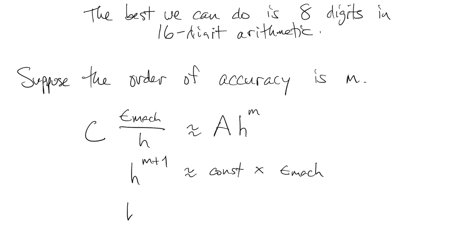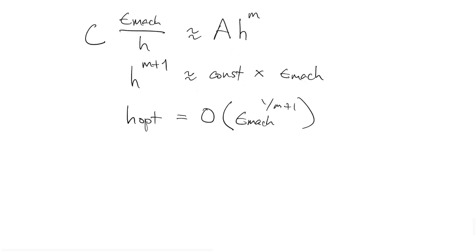When we work it out, this means that h-opt is now machine epsilon to the one over m plus one power.